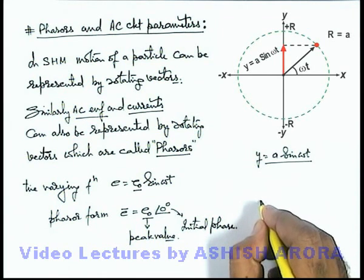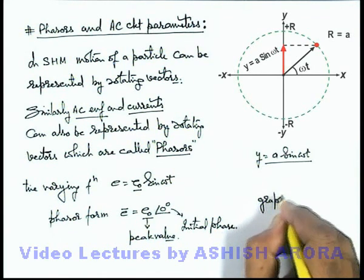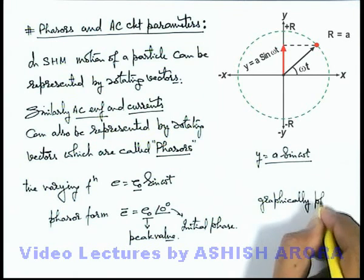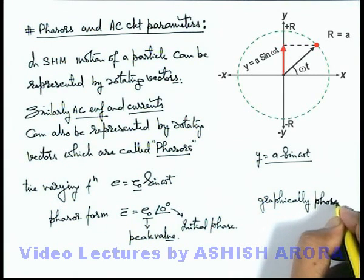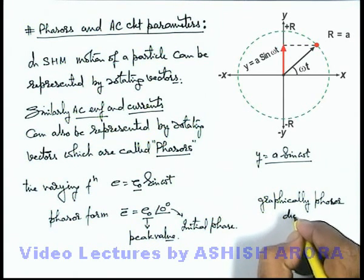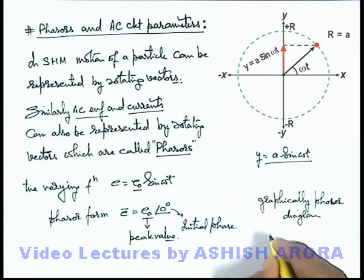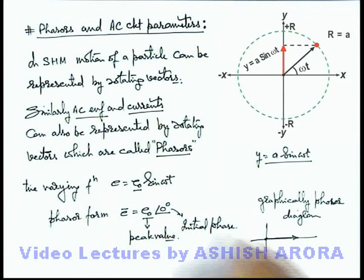And graphically if we wish to represent, phasor diagrams can be drawn, but in this situation we draw only the amplitude. Say its amplitude is E_0, we write E_0. This is at zero degree so for reference line its angle is zero. So this is the way how graphically it is represented.